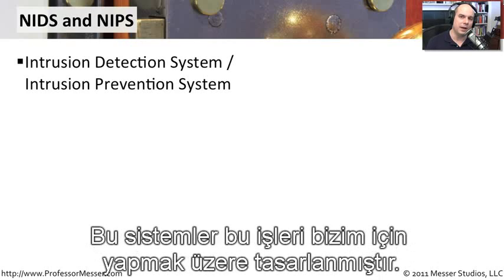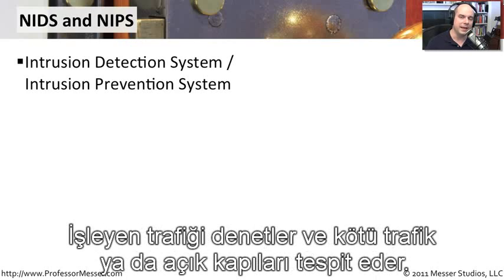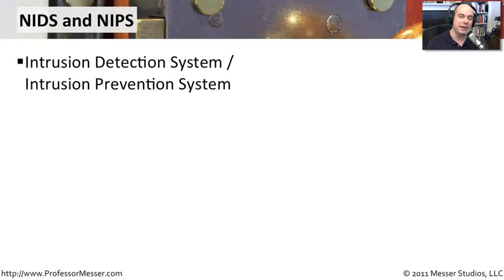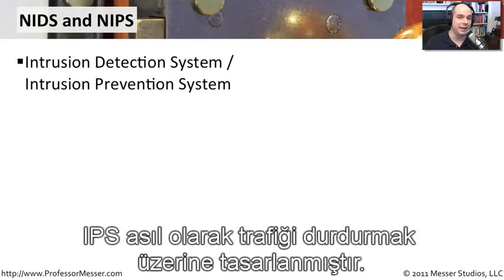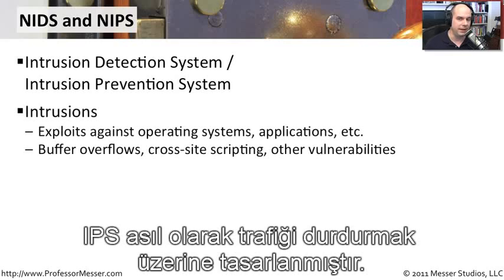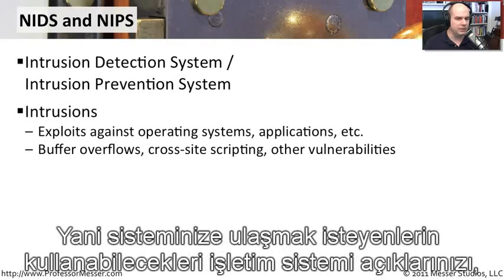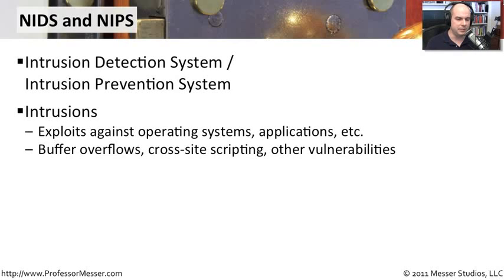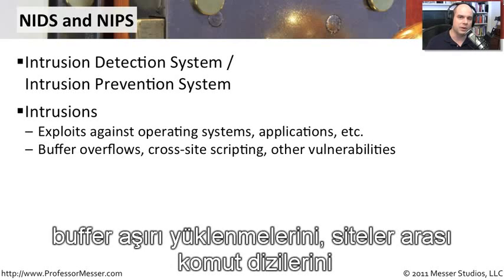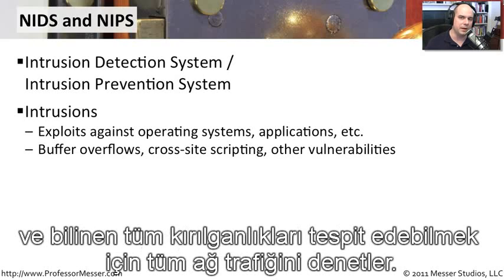These systems are designed to watch the traffic go by, and if they see something, they will detect that a vulnerability or some type of bad traffic is inside those traffic flows. In the case of an IPS, those systems are designed to actually stop that traffic. They look through all of the traffic to identify known exploits against operating systems, things like buffer overflows or cross-site scripting — very well-known vulnerabilities that people try to use to gain unauthorized access.